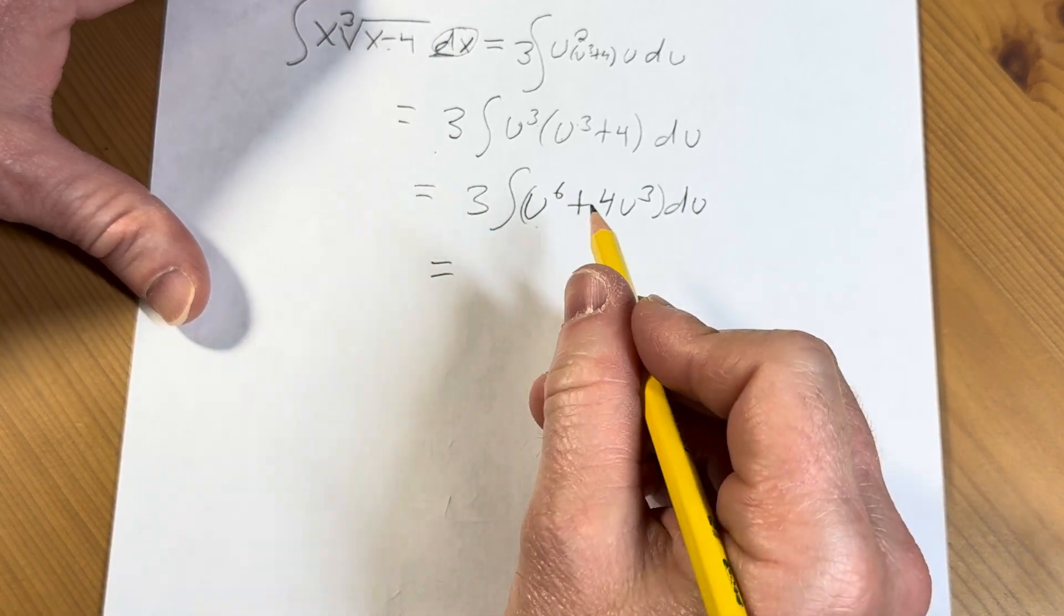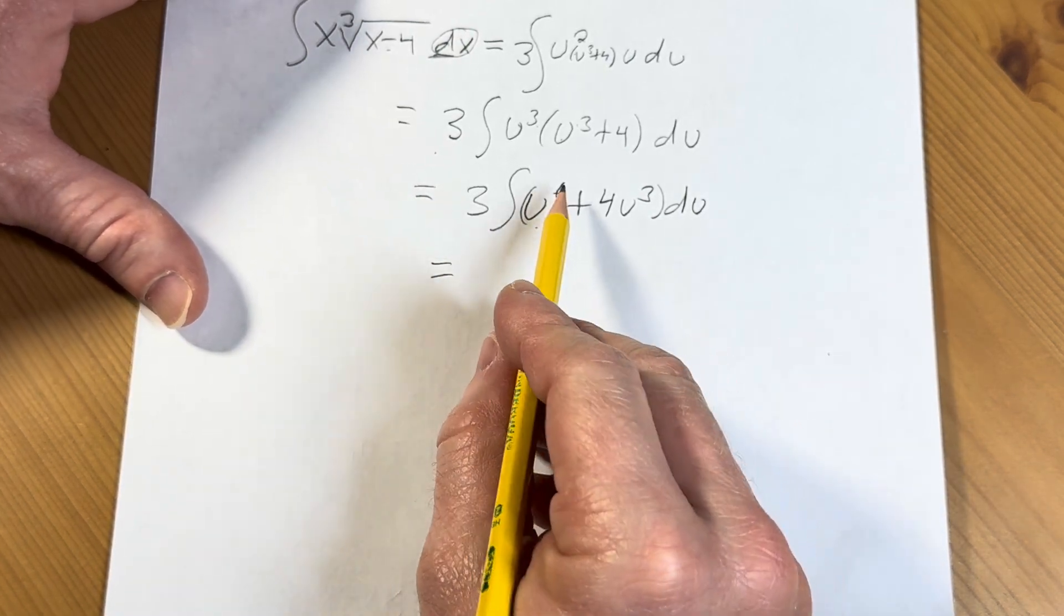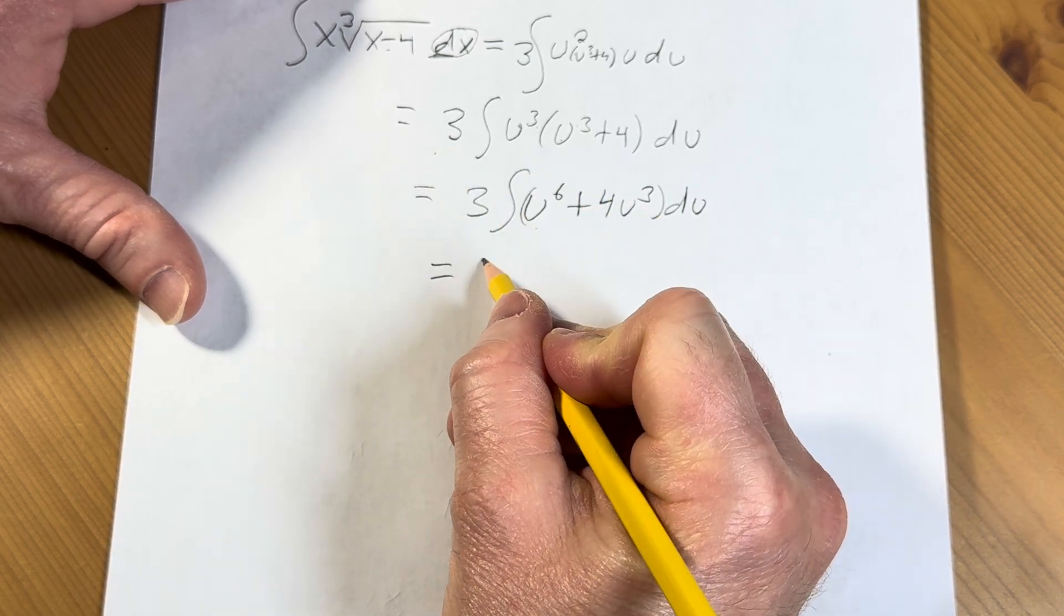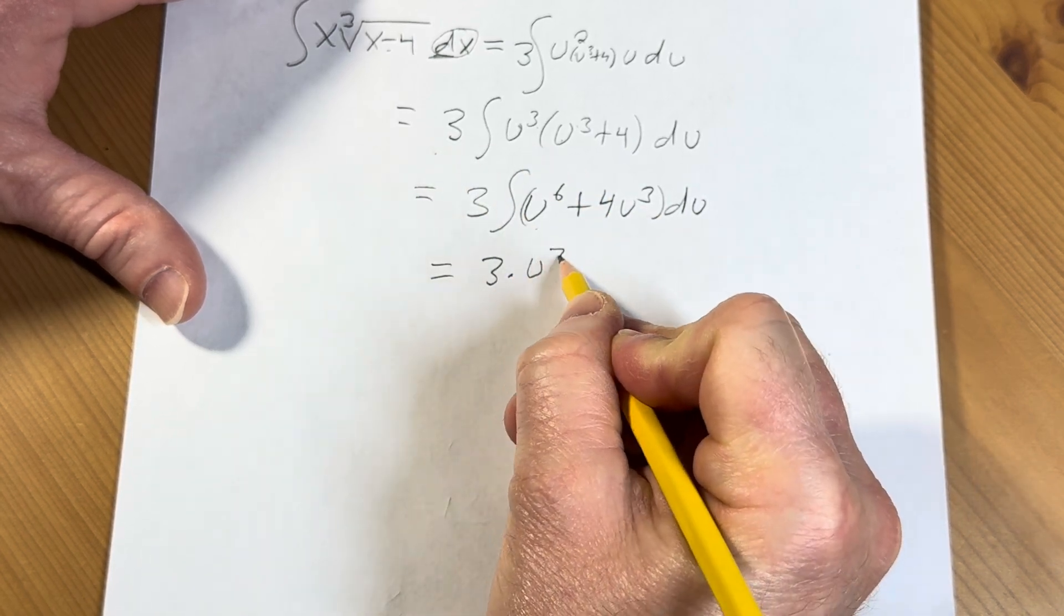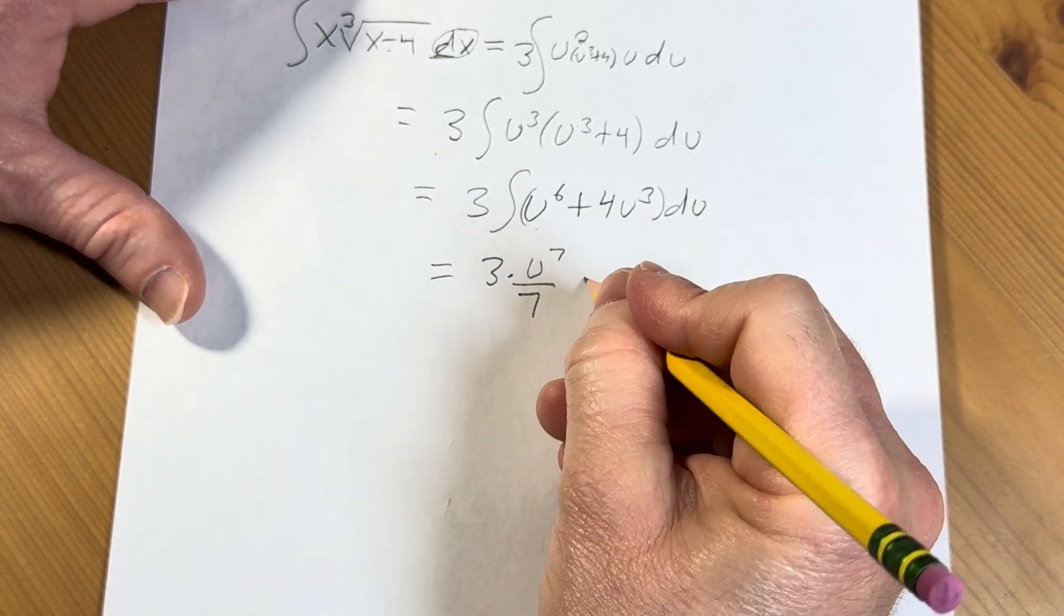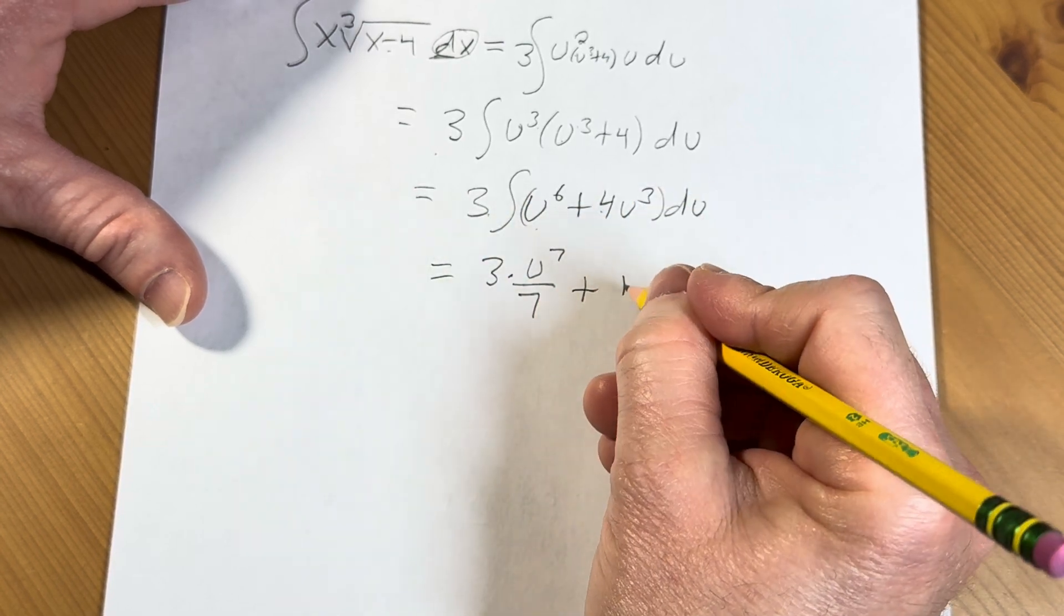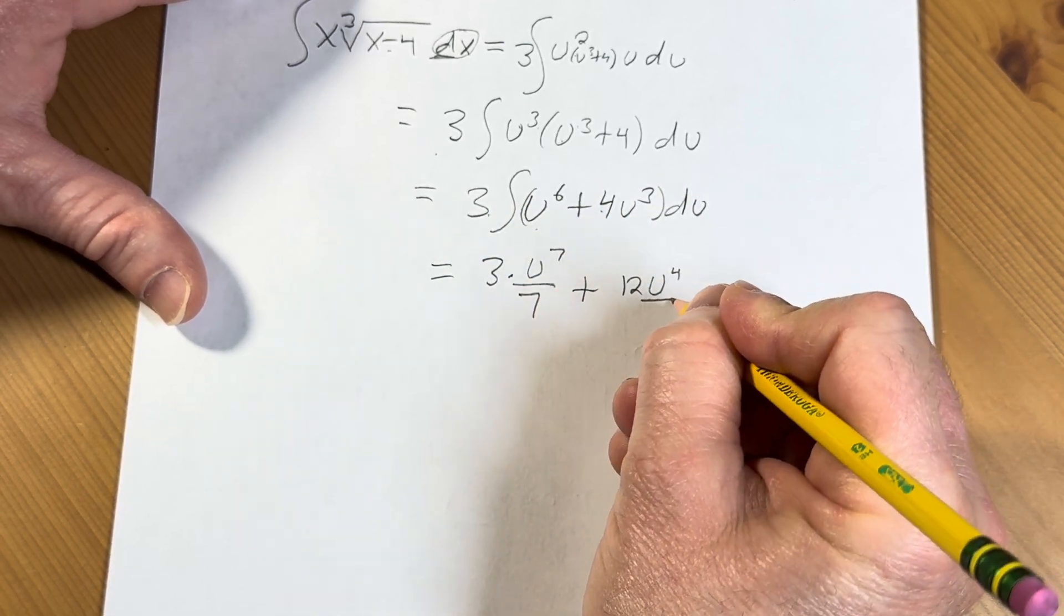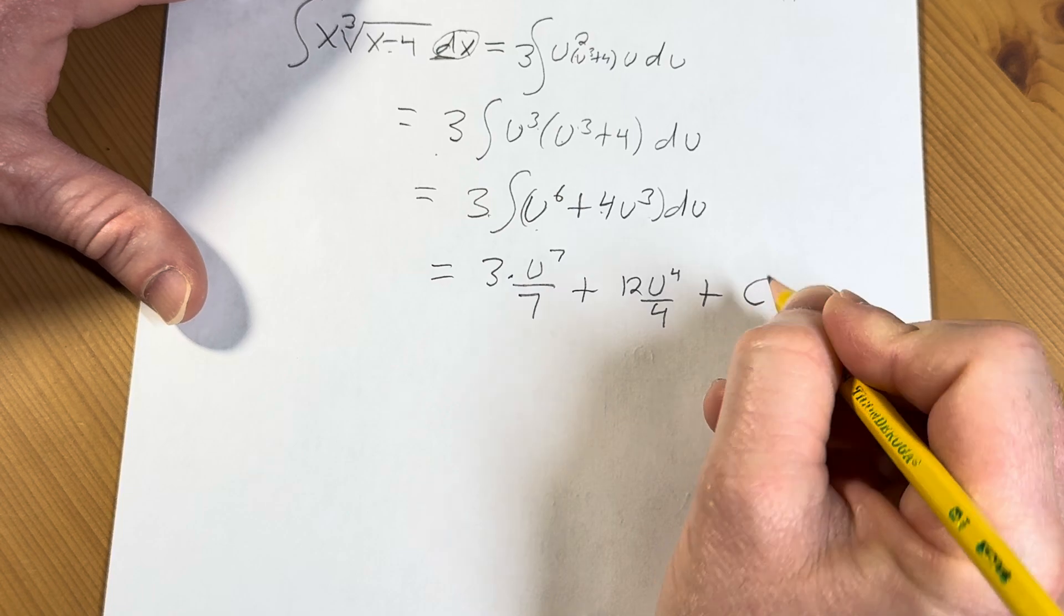This is equal to, let's go ahead and distribute 3 and integrate at the same time. We're going to apply the power rule to each of these. This is 3 times u to the 7 over 7. Plus 3 times 4 is 12, so that's u to the 4 over 4. Plus our constant of integration.